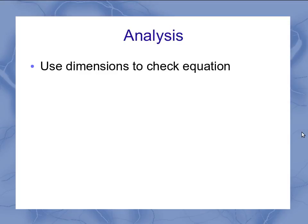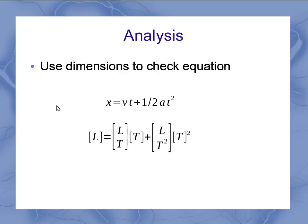We can also use dimensional analysis to check an equation. So let's say we're given this equation here: position equals velocity times time plus one half the acceleration times time squared. That's one we'll see in the next chapter as well.